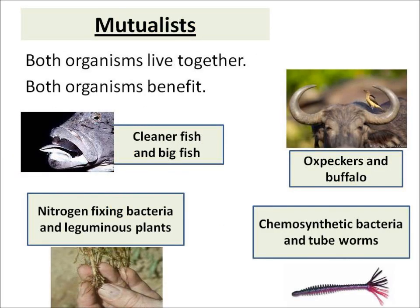Mutualism involves two different species of organisms that live together where both organisms do well — both organisms benefit. You need to know about four examples.